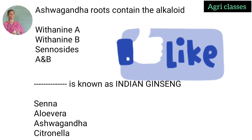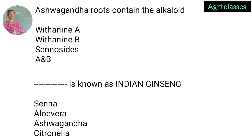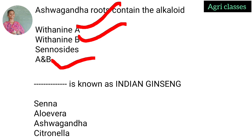Ashwagandha roots contain alkaloids. The options are: (a) withaferin-A, (b) sitoindosides, (c) both A and B. The correct answer is option C — both withaferin-A and sitoindosides. Additionally, Ashwagandha is known as Indian ginseng. The correct answer is Ashwagandha.